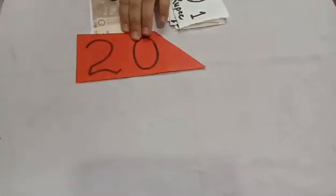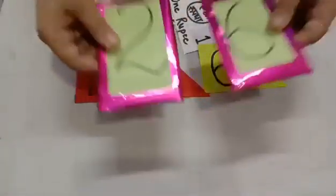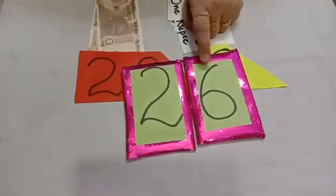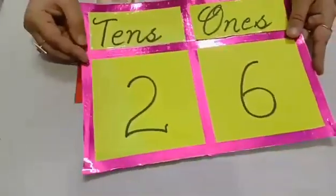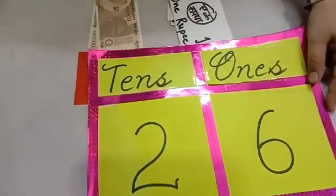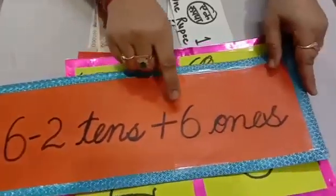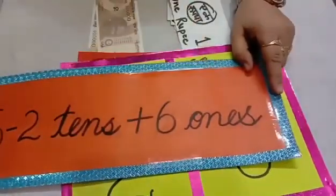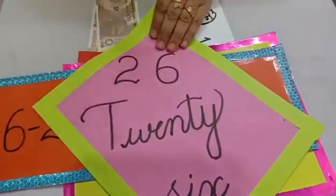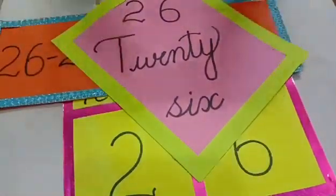So this is 20 and this is 6. How can we write this? 26. We know in 26 there are 2 tens and 6 ones. We can write this as: 26 is equal to 2 tens plus 6 ones. And lastly, we can write 26 in words also.